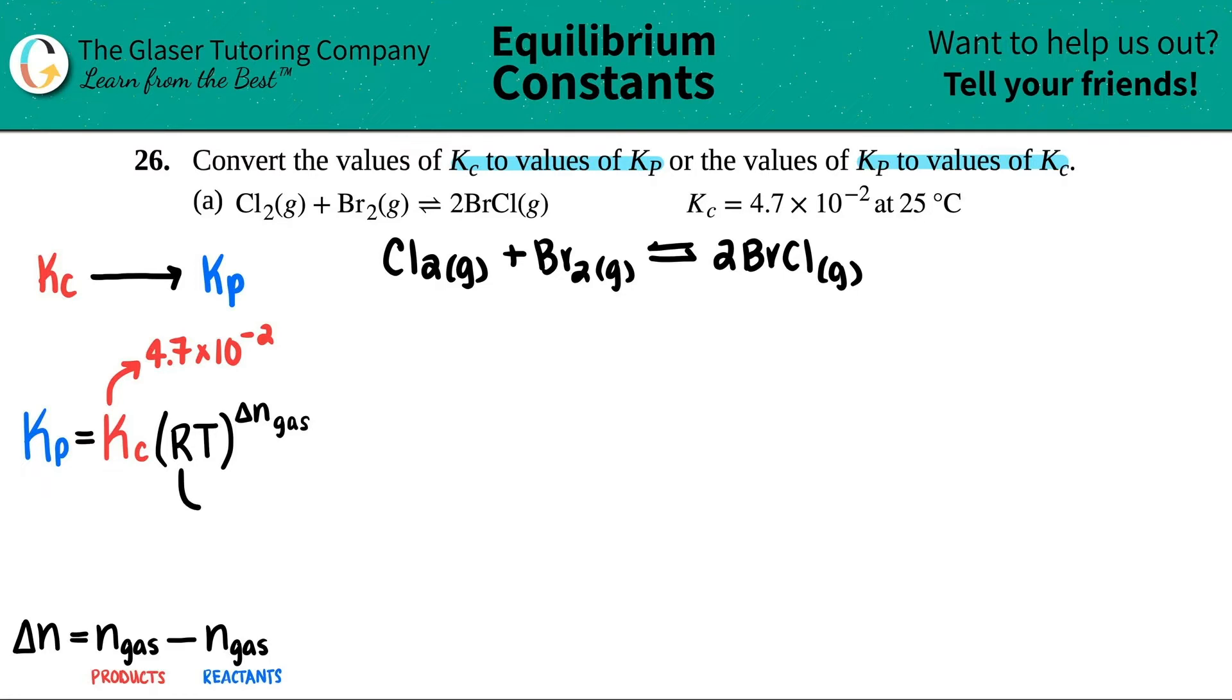Let's start with R. R is a constant value. And since we're using pressures, or we're talking about pressure, P stands for pressure and Kp, and we're using gases, we have to use the gas constant, which is 0.0821. We will not be using the 8.314, because that's only used with energy values. Here, we're not talking about energy at all, so we don't use it.